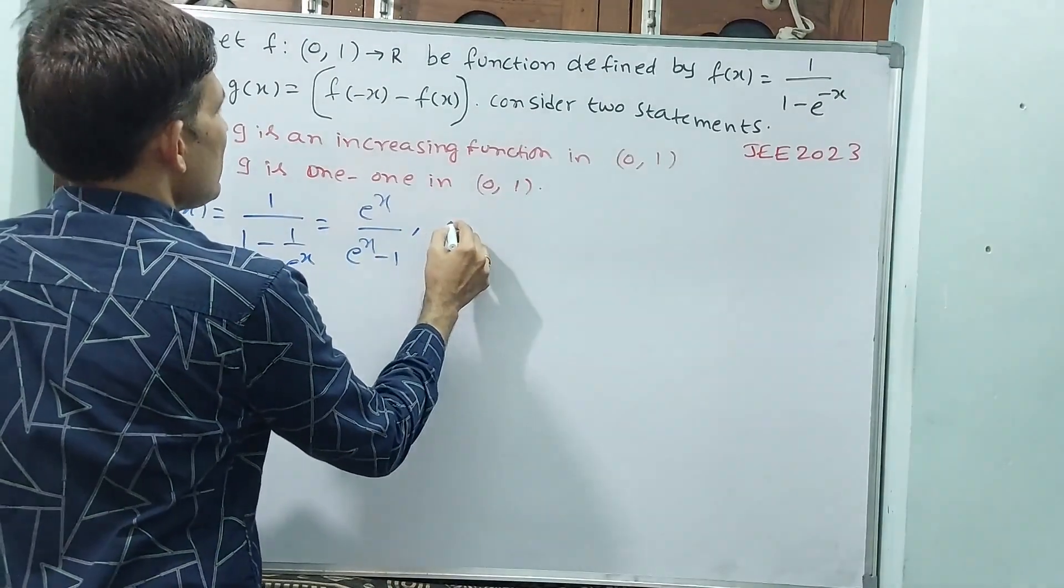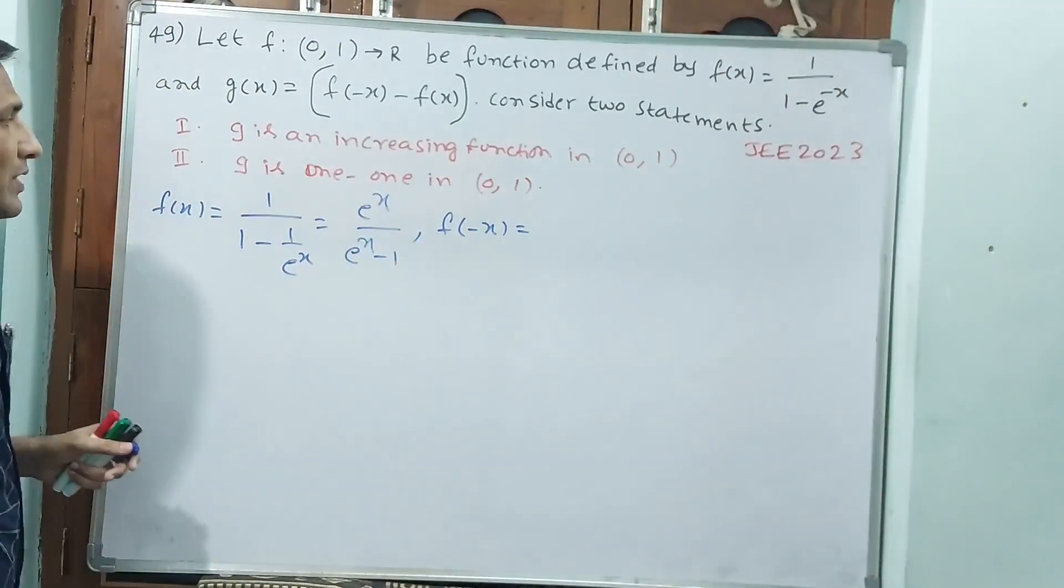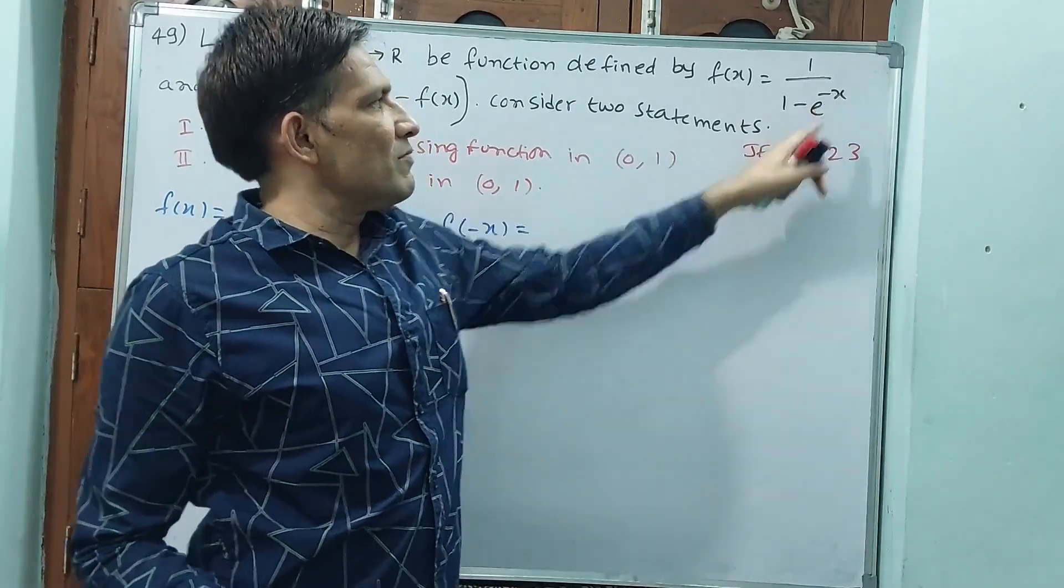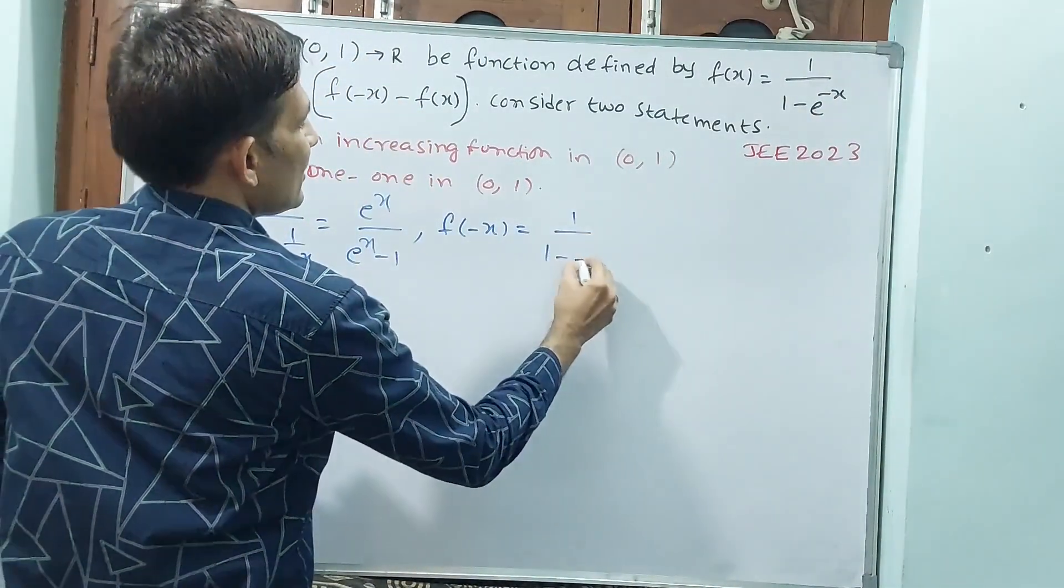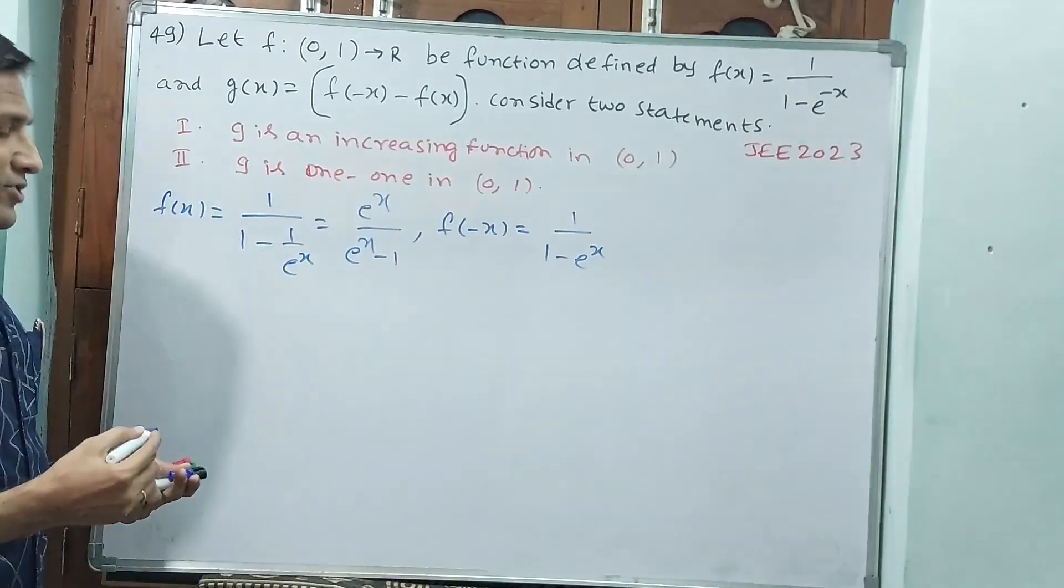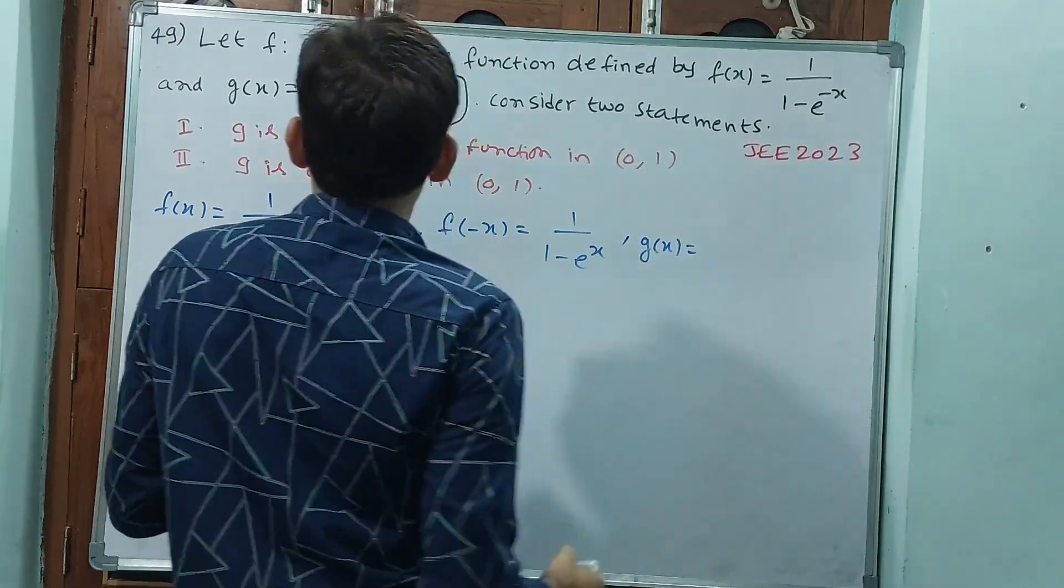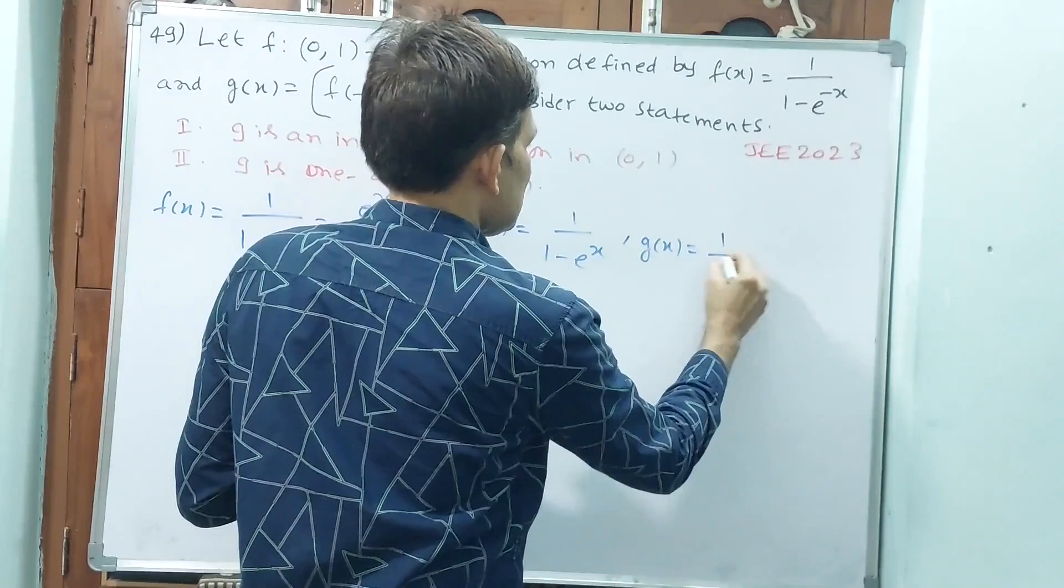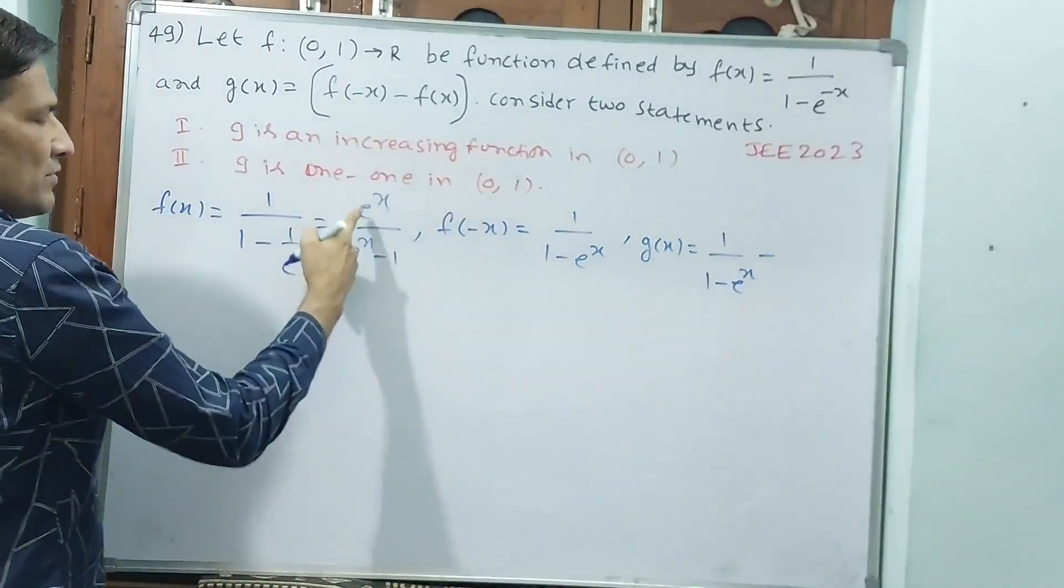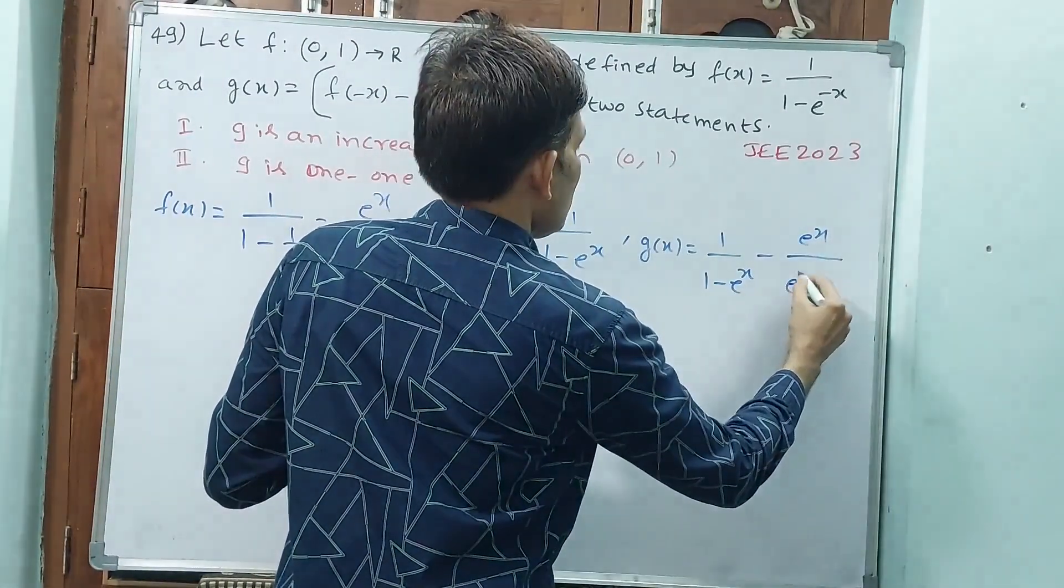Then go for f(-x) also. f(-x) means directly keep minus here, then 1/(1 - e^x). Now you write g(x). g(x) is equal to f(-x) minus f(x). That means 1/(1 - e^x) minus e^x/(e^x - 1).